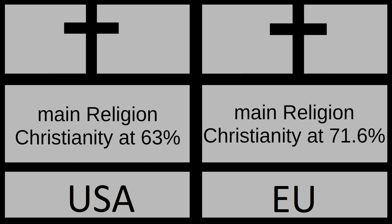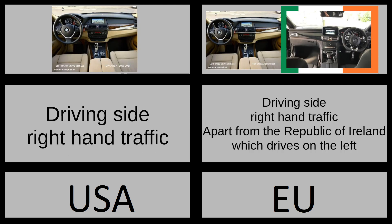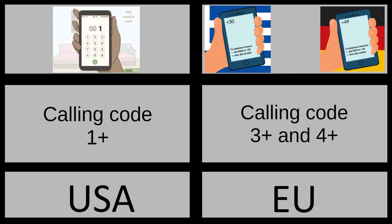Main religion: Christianity at 60% versus Christianity at 70%. Date format: month/day/year versus day/month/year. Driving side: right-hand traffic for both, apart from the Republic of Ireland which drives on the left. Calling code: +1 versus +3 and +4.